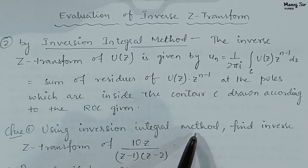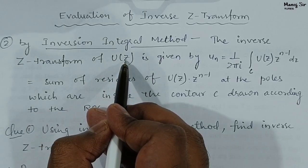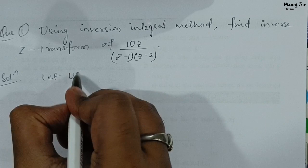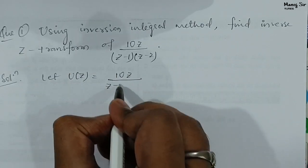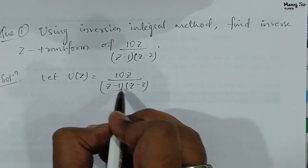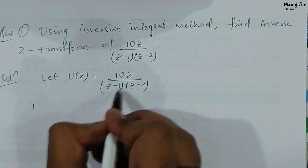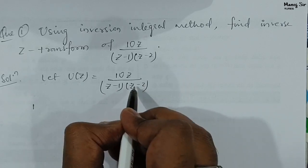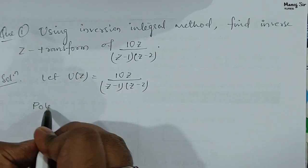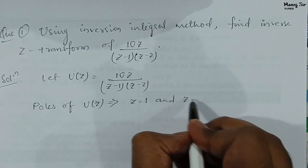The question says: using the inversion integral method, find the inverse Z transform of 10z upon (z minus 1) into (z minus 2). This is U(z). So we write U(z) = 10z / [(z−1)(z−2)]. Here we have (z−1) and (z−2). Equating each to zero gives z = 1 and z = 2. So the poles of U(z) are z = 1 and z = 2.